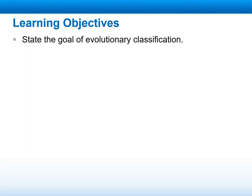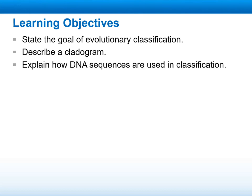In our learning objectives for this week, we will talk about the goals of evolutionary classification, and we will describe cladograms — how do they classify animals on their cladogram based on how DNA sequences are used in this classification. We will also describe what the tree of life illustrates.